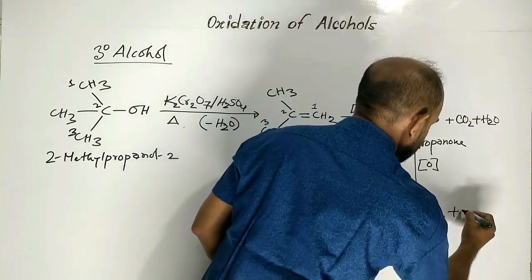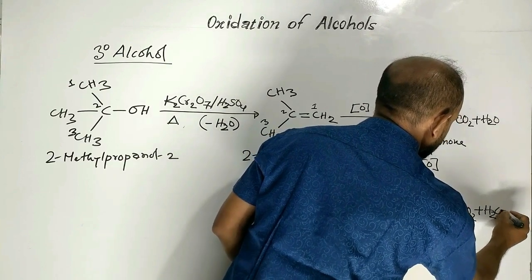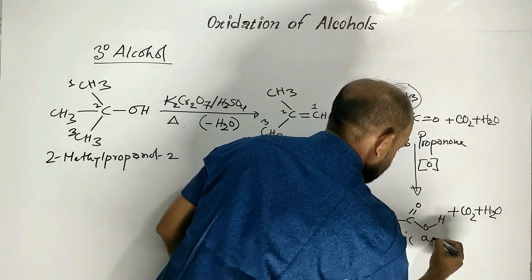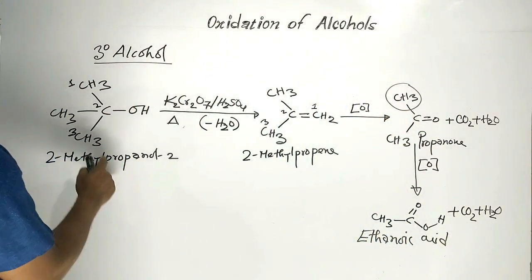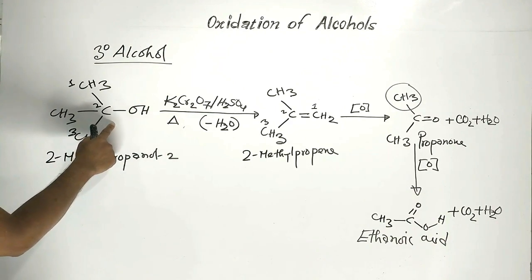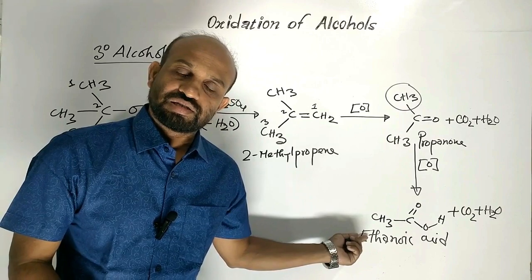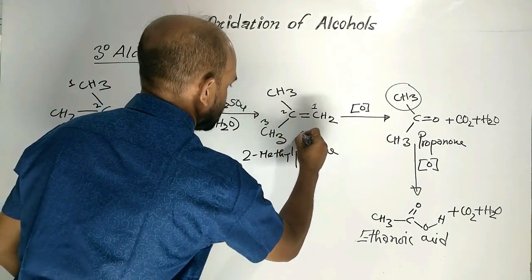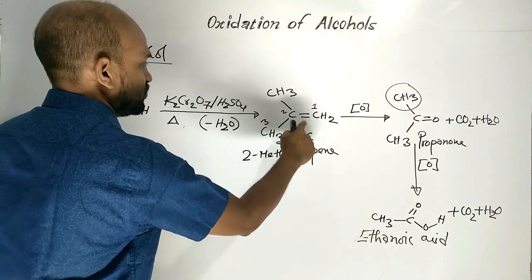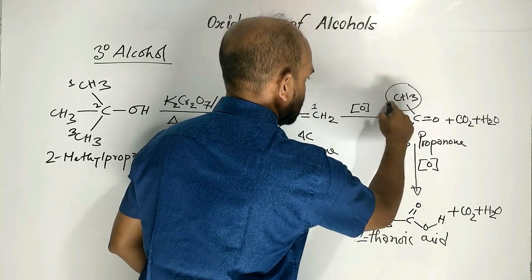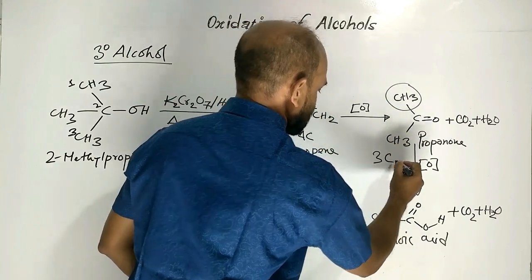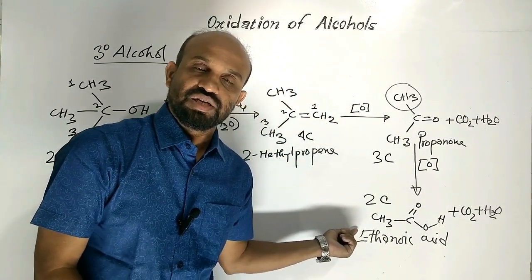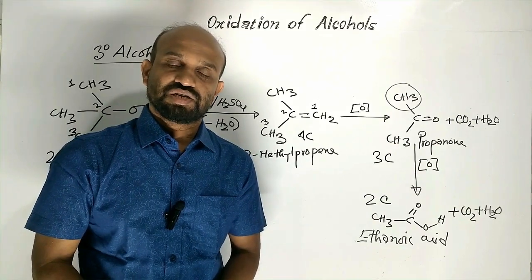This group converts to carbon dioxide and water. This is ethanoic acid. So when 3 degree alcohol is oxidized, ultimately acetic acid is obtained. In this case, the starting compound contains 4 carbon atoms, the intermediate contains 3 carbon atoms, and the final product contains 2 carbon atoms. So here we can say that in each step, the number of carbon atoms is decreased by 1.